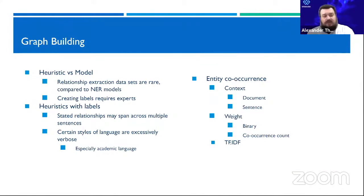There's two ways we can extract relationships: heuristics and models. Models for this are very rare. The idea of relationship extraction is not as common of a set of models out there as we find for NER models.